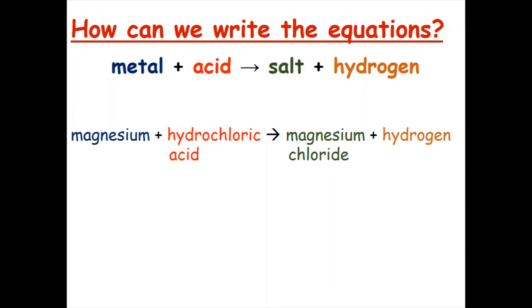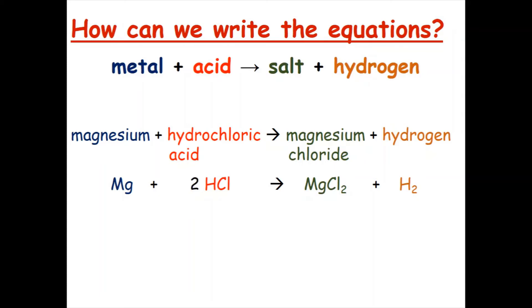Now we are going to transform this into a symbol equation. The symbol for magnesium is Mg, the formula for hydrochloric acid is HCl, and they react to magnesium chloride, the formula is MgCl₂, plus H₂ for hydrogen. Now there is only one more thing we need to do to balance this equation, and that is to put a 2 in front of the HCl for hydrochloric acid.